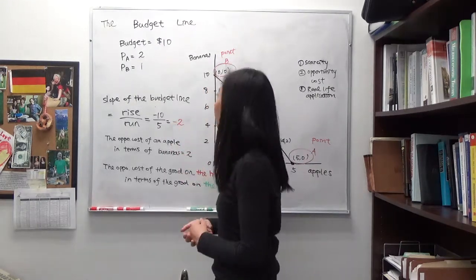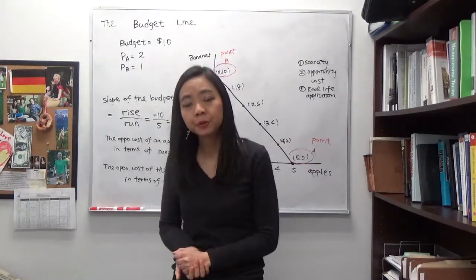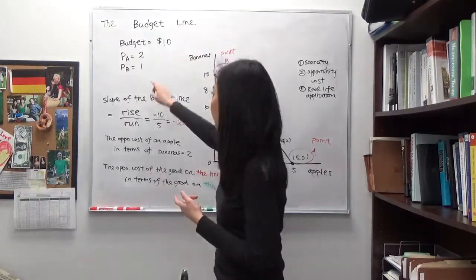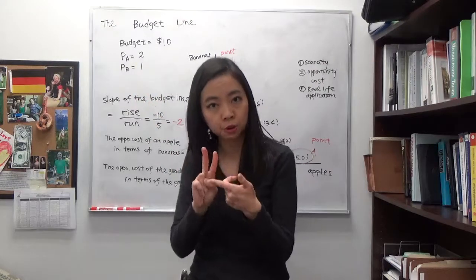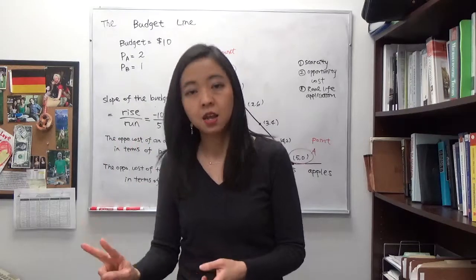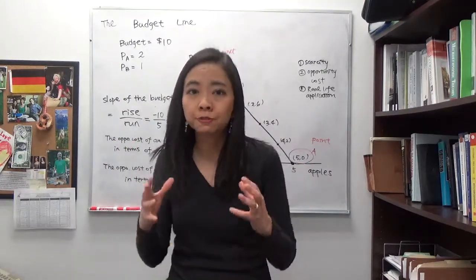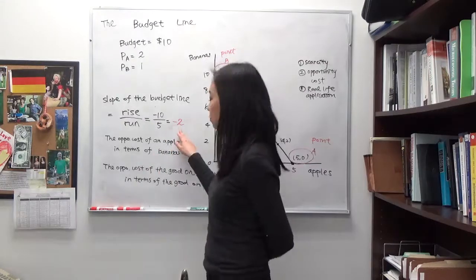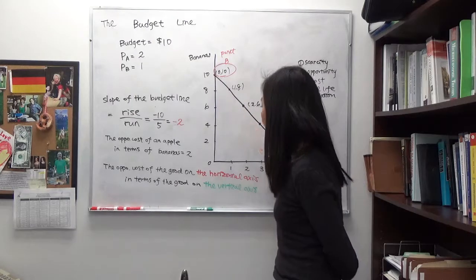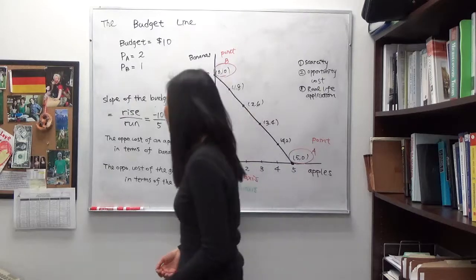So what does that mean? Well, the price of an apple is $2. In order to buy an apple, that means you cannot use that $2 to buy how many bananas? The price of a banana is $1. So if you use $2 to buy 1 apple, that means you cannot use that $2 to buy 2 bananas. And therefore, in order to get 1 apple, you have to sacrifice 2 bananas. And that's the reason why you see a negative sign here.